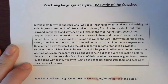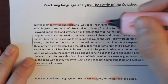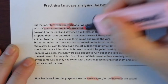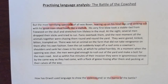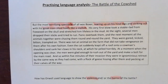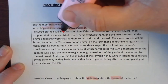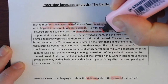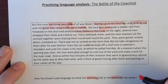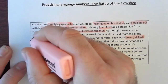So we have: 'But the most terrifying spectacle of all was Boxer.' Terrifying spectacle — that is a really horrific image — 'rearing up on his hind legs and striking out with his great iron-shod hooves like a stallion.' So we've got this image of Boxer, this huge beast, up on his hind legs with his horseshoes, almost striking out, almost punching. 'His very first blow took a stable lad from Foxwood on the skull and stretched him lifeless in the mud. At the sight, several men dropped their sticks and tried to run. Panic overtook them and the next moment all the animals together were chasing them round and round the yard. They were gored, kicked, bitten, trampled on.' We'll talk about that little sentence there.